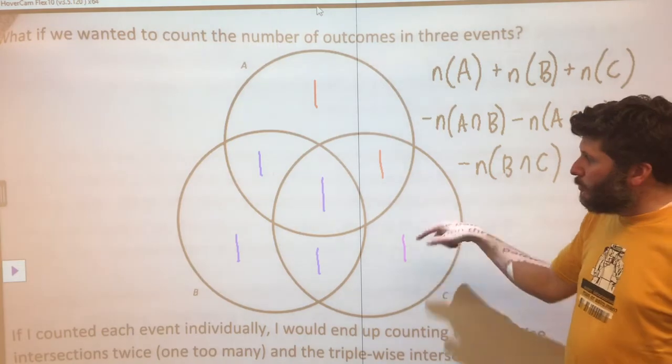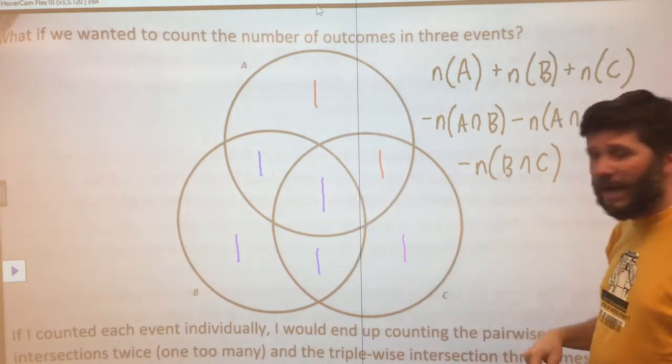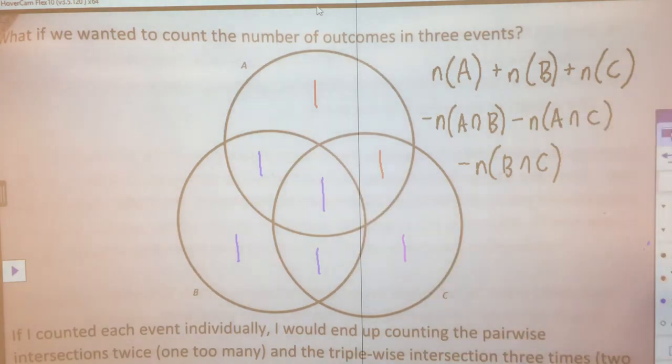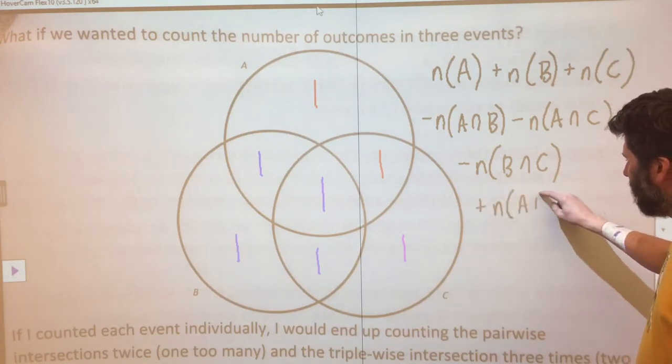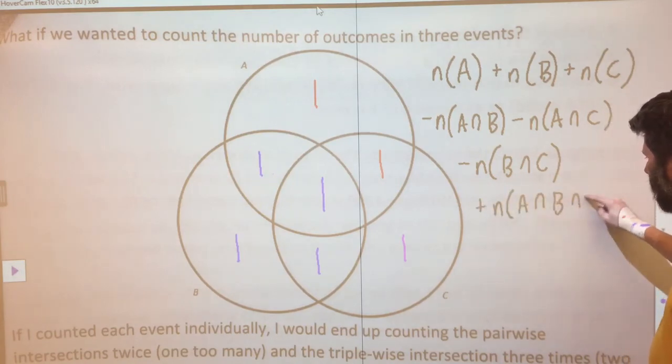At that point, it got me ones everywhere, except that it also got me a zero in the middle. Therefore, what I did was I added back the intersection in all three of them.